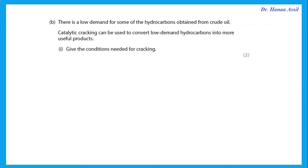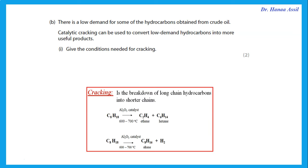There is a low demand for some hydrocarbons obtained from crude oil. Catalytic cracking can be used to convert low-demand hydrocarbons into more useful products. Give the conditions needed for cracking. Cracking is the breakdown of long-chain hydrocarbons into shorter chains, using an aluminum oxide catalyst at 600 to 700 degrees Celsius.